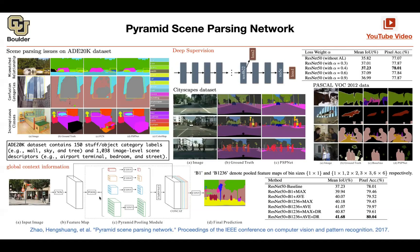There are multiple solutions. One of them is pooling: you pool the entire feature map into a single vector. Another time, divide your input feature map into four sub-feature maps and pull them separately, then do this nine times or even more, then push them through a convolution one by one so that computational expense doesn't grow, and then concatenate them and do your prediction.